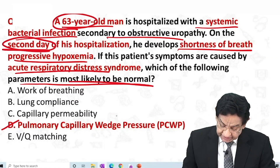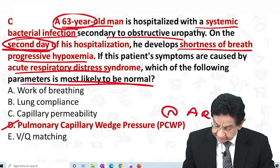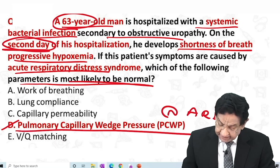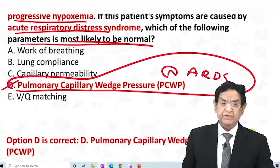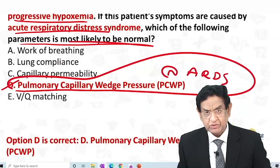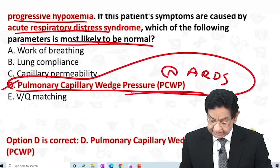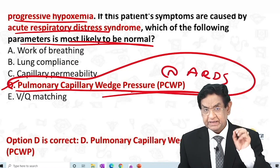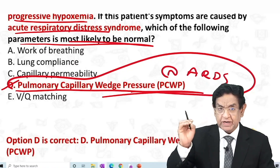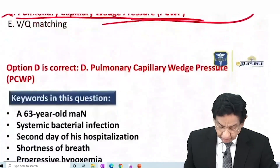Pulmonary capillary wedge pressure is normal in ARDS. This is a golden line to remember. Whenever you get a question on ARDS, quite likely they will talk about PCWP — that is pulmonary capillary wedge pressure — which is normal. Let's discuss in more detail.